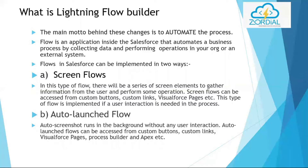Flow in Salesforce can be implemented generally in two ways: screen flow and auto launch flow. In a screen flow, there will be a series of screen elements to gather information from the user and perform some operation. Screen flow can be accessed from custom buttons, custom links, Visualforce pages, and more. This type of flow is implemented when user interaction is needed in the process.